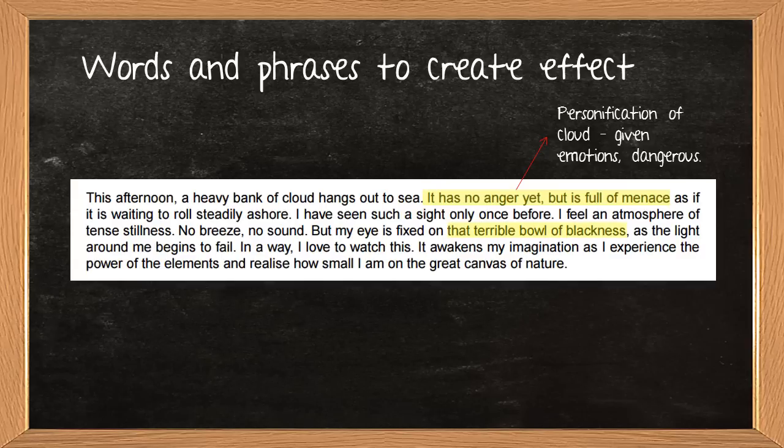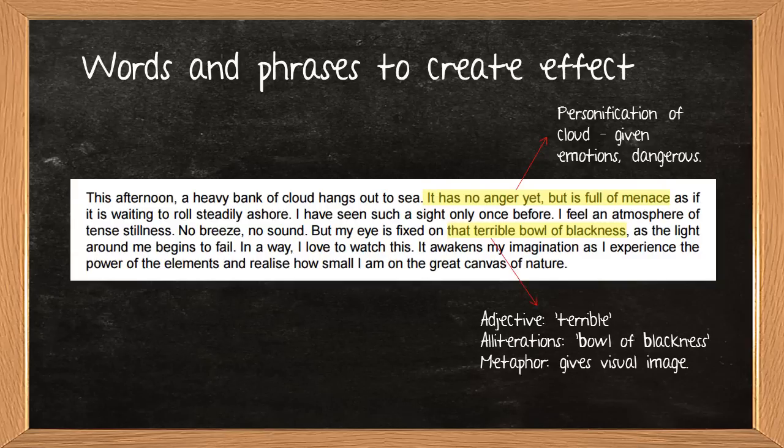There's also loads more that we could pick out, but I think the next one that I quite liked here was that terrible bowl of blackness, just because there's lots in that really short phrase. I picked out the fact that the adjective there terrible is really effective because it's just building up again that atmosphere and being really ominous and dangerous. There's alliteration there as well, bowl of blackness. So those buff sounds really kind of come out. They're quite plosive sounds. They make an angry sound as you say them. And the metaphor as well, the fact that it's described as a bowl, because obviously you're looking at the appearance of the cloud, it gives us a visual image of it there in the bowl shape, kind of hanging down.